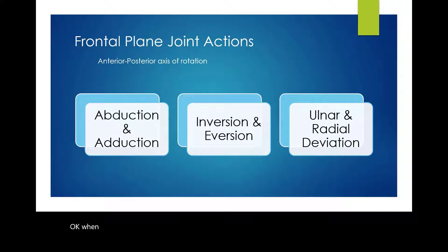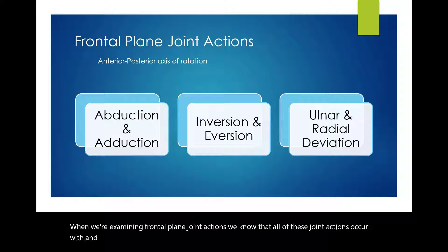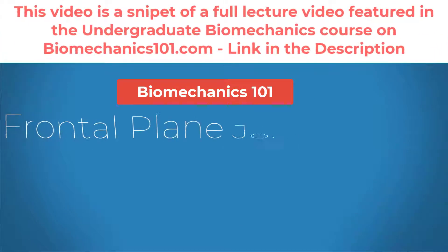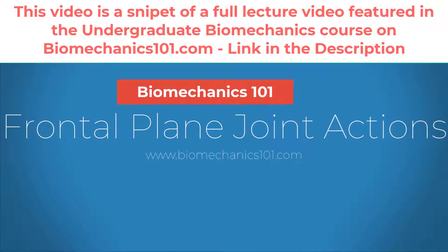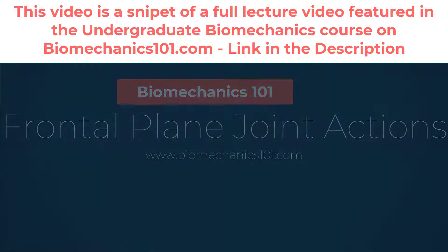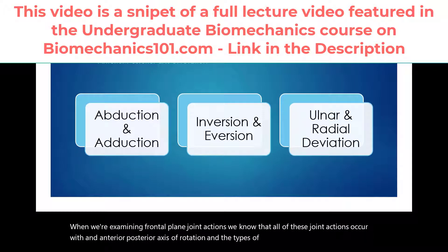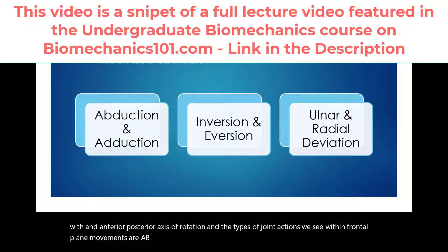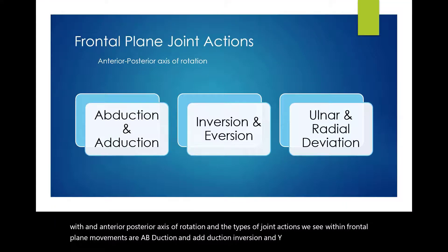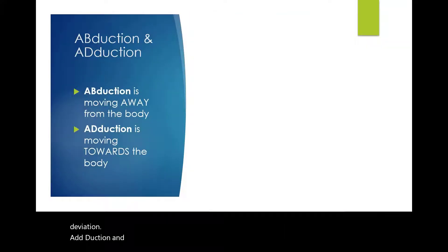When we are examining frontal plane joint actions, we know that all of these joint actions occur with an anterior-posterior axis of rotation. The types of joint actions we see within frontal plane movements are abduction and adduction, inversion and eversion, and ulnar and radial deviation.